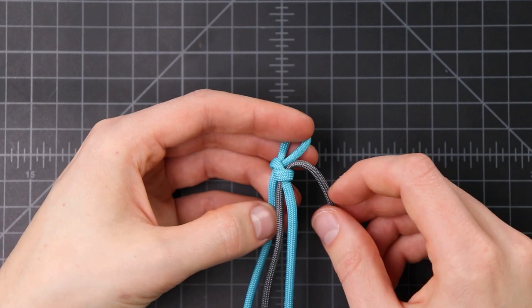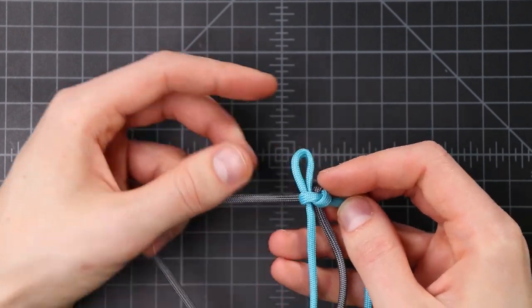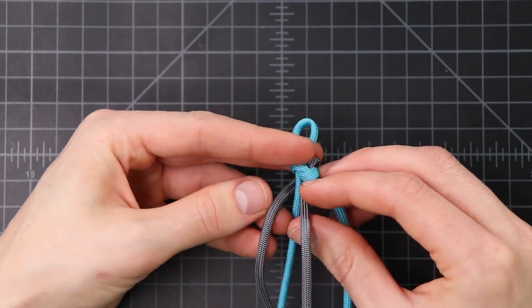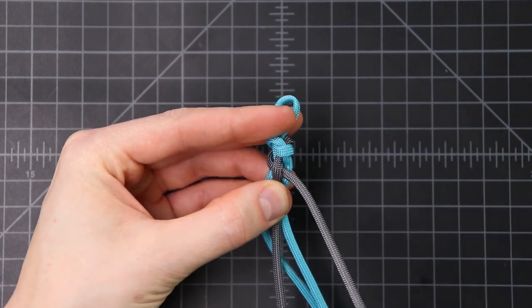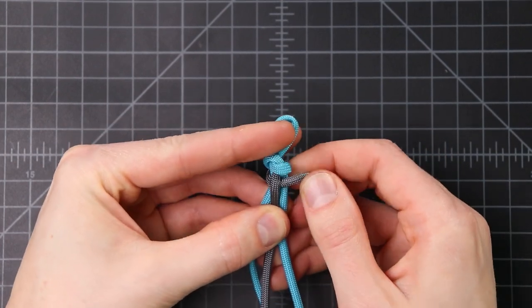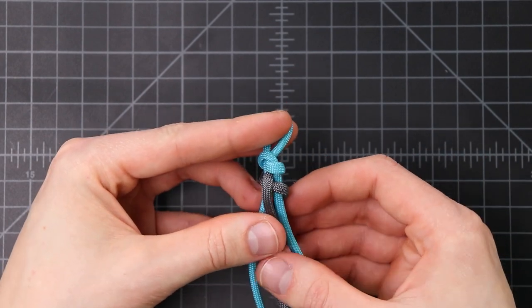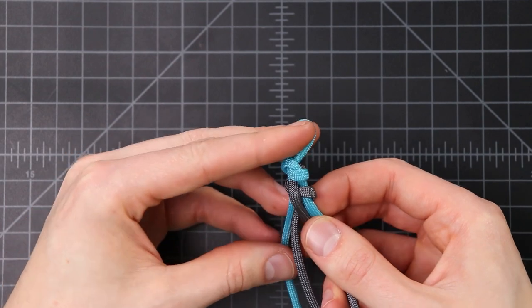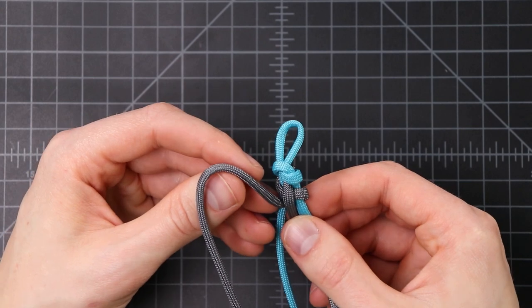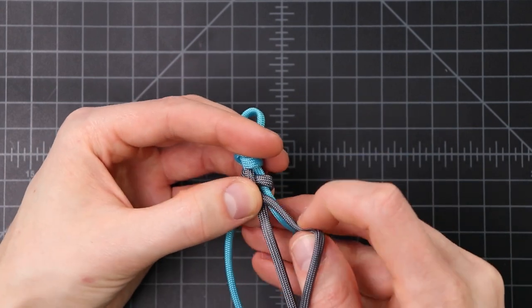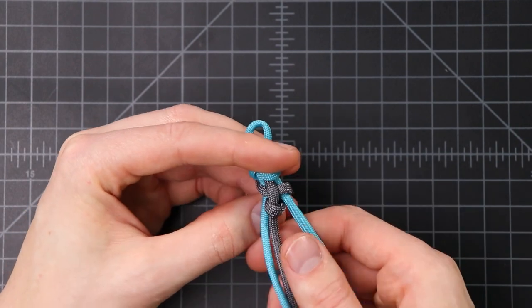So we'll start by wrapping our cord to the left and we're going to go across our 2 blue cords here. Next we're going to bring it down behind that and come up right here to the left of our middle cord and then over the top of that middle cord and down to the bottom of our bracelet.